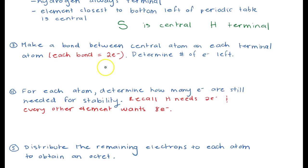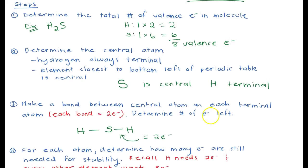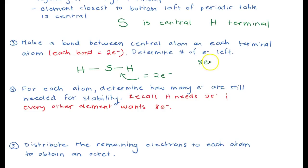We want to make a bond between the central atom and each terminal atom. So if I have sulfur in the middle, I want to form a bond between sulfur and each hydrogen. One thing to keep in mind is that each bond we draw is equal to two electrons — the glue holding the atoms together for a single bond is two electrons. We started with eight total, and we formed two bonds, using up four electrons.